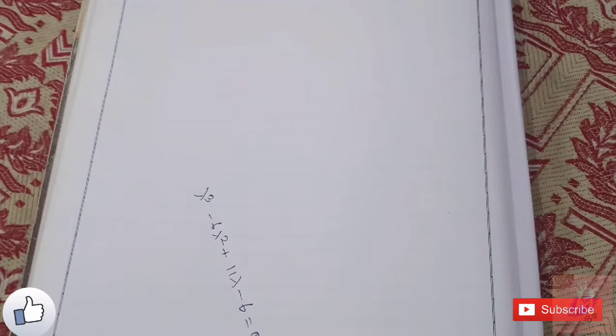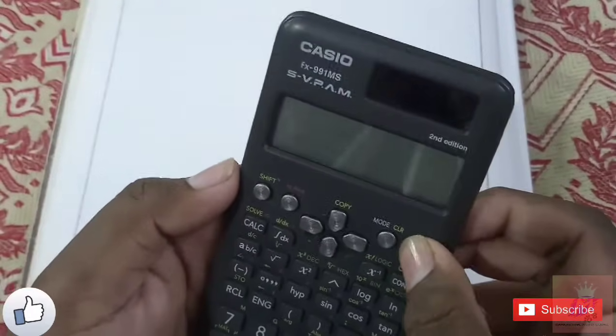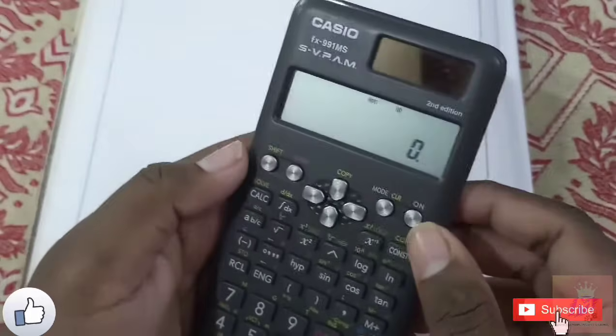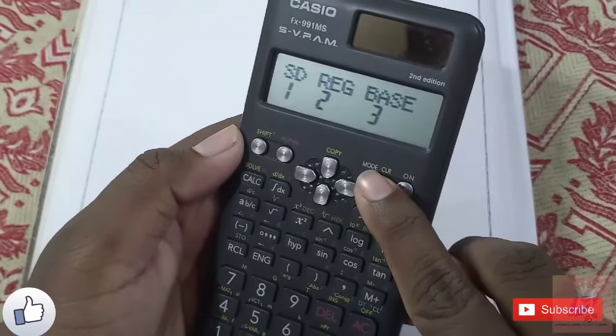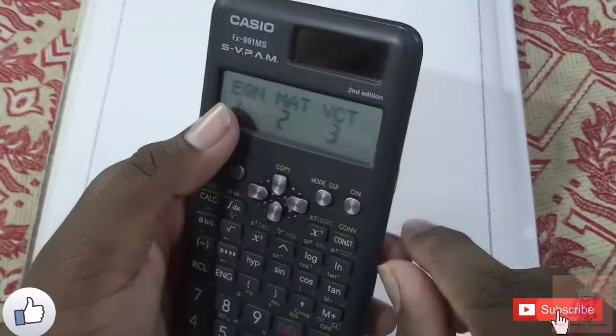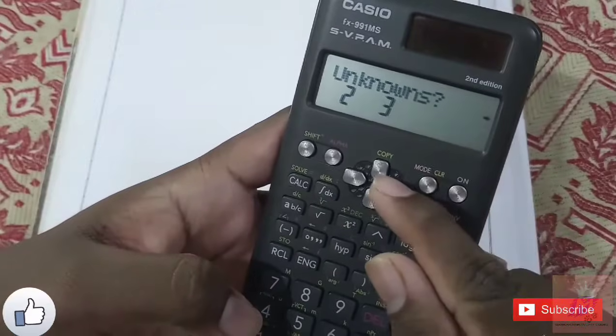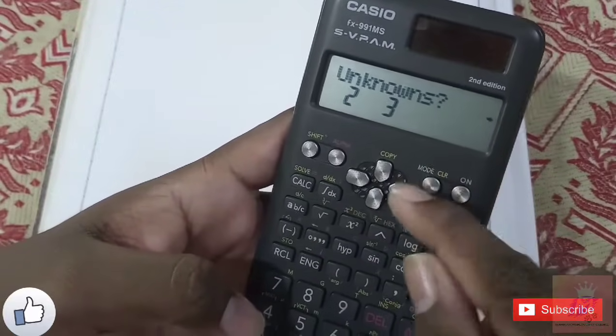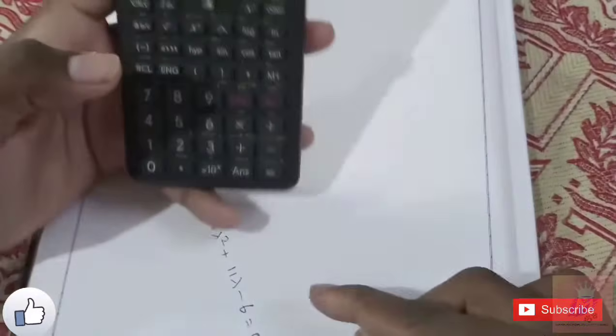I'm using the Casio FX-991MS. Let's turn on the calculator. Press the mode button to access the equation solver. We can now see options for entering 3 values.